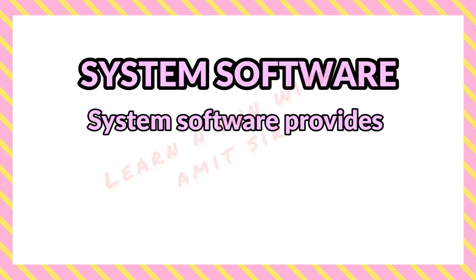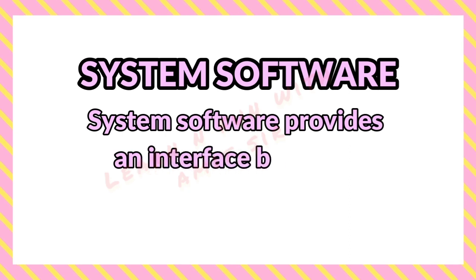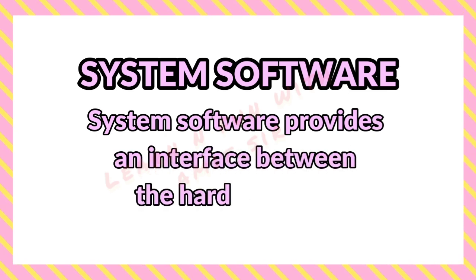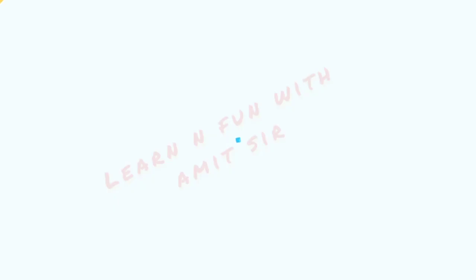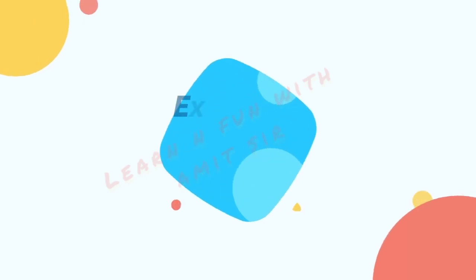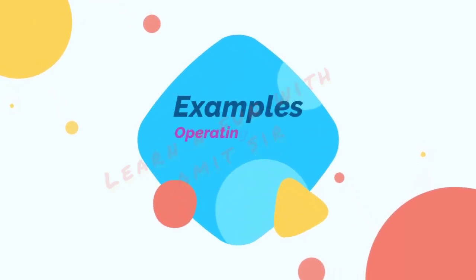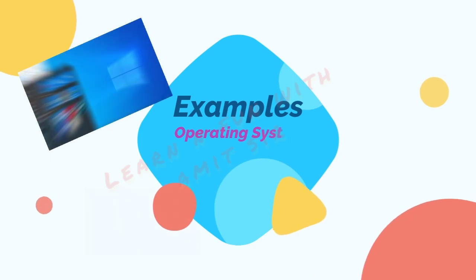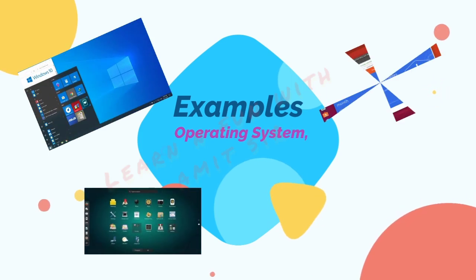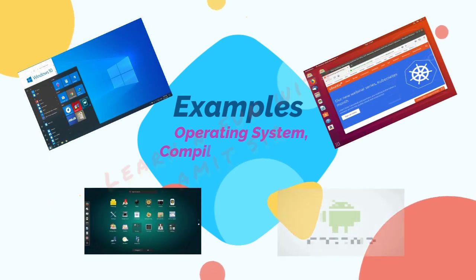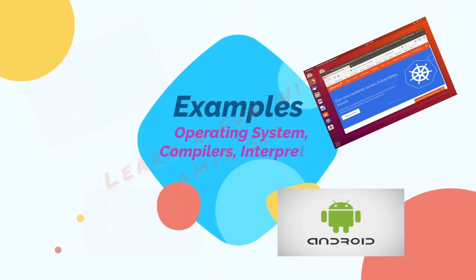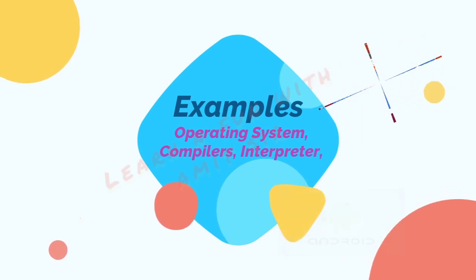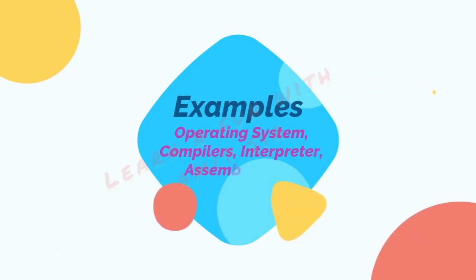System software provides an interface between the hardware and the end user. Some examples of system software are operating systems like Windows, Linux, Ubuntu, Android, then compiler, interpreter, assembler, and various antivirus software, disk backup software, etc.